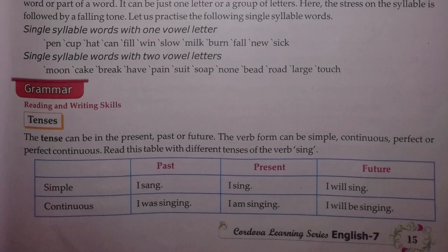So what do you mean by tense? The tense can be in the present, past, or future, as we have already done in our classes. Types of tense: first is simple past, simple present, and simple future. For simple present, the form is subject plus V1. For simple future, it is subject plus will/shall plus V1. For continuous tenses, the form is always V1 plus ing.